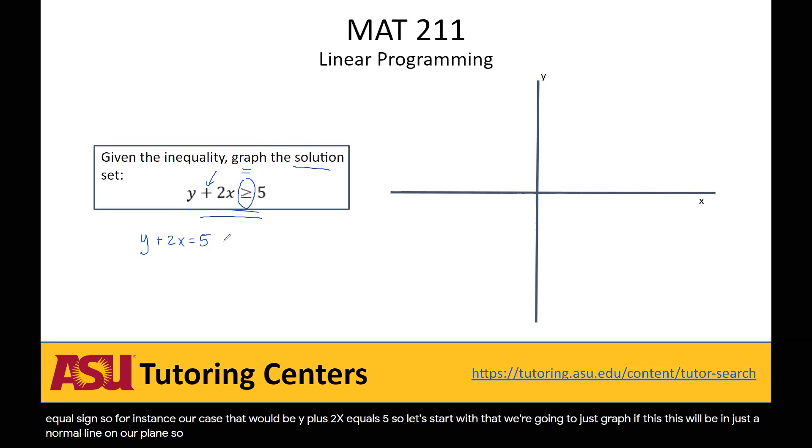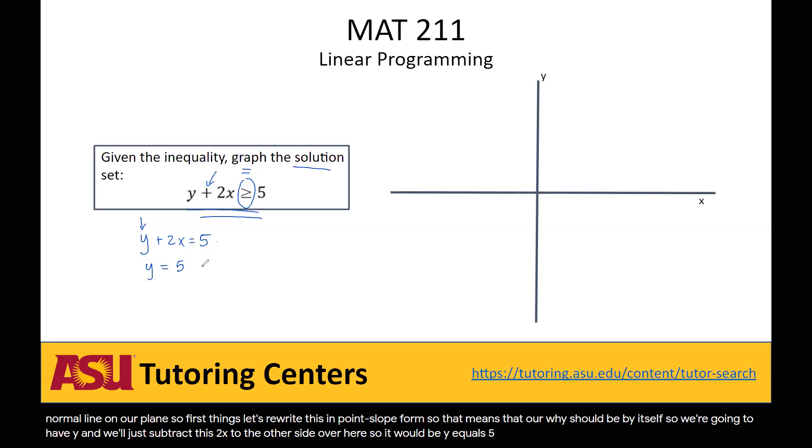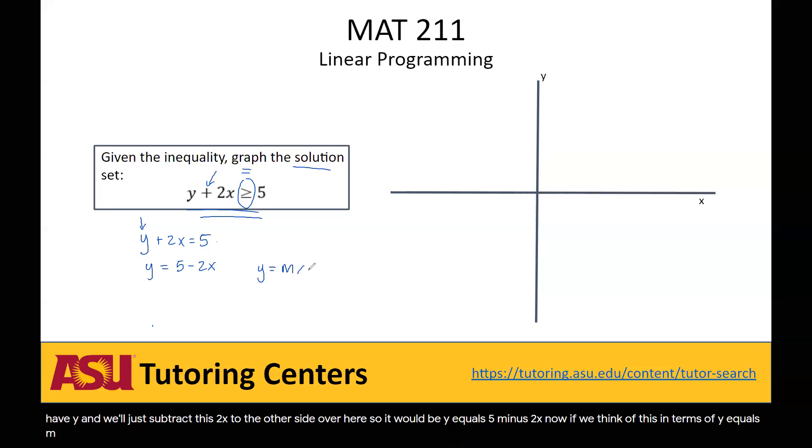First things, let's rewrite this in point slope form. That means that our y should be by itself. So we're going to have y, and we'll just subtract this 2x to the other side. So y equals 5 minus 2x.